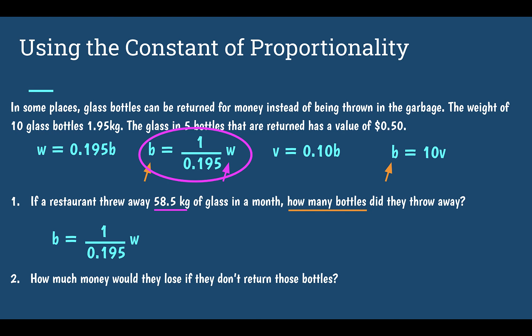I just have to multiply the weight times 1 over 0.195. Taking my constant of proportionality and multiplying by my W, I end up with 300. So in this proportional situation, they threw away 300 bottles — because they threw away 58.5 kilograms of glass.